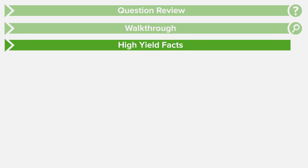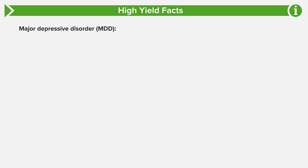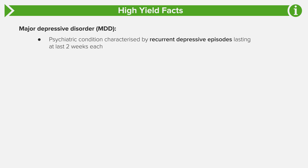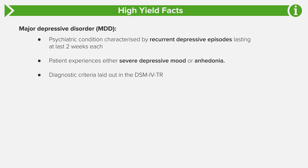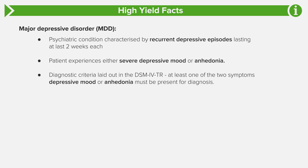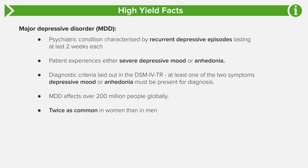Now let's go through some high-yield facts from this question. Major depressive disorder is a psychiatric condition characterized by recurrent depressive episodes lasting at least two weeks, during which the patient experiences either severe depressive mood or anhedonia. The diagnostic criteria are described in DSM-4 TR, which states that at least one of those two symptoms must be present. MDD affects over 200 million people globally and is nearly twice as common in women as in men.